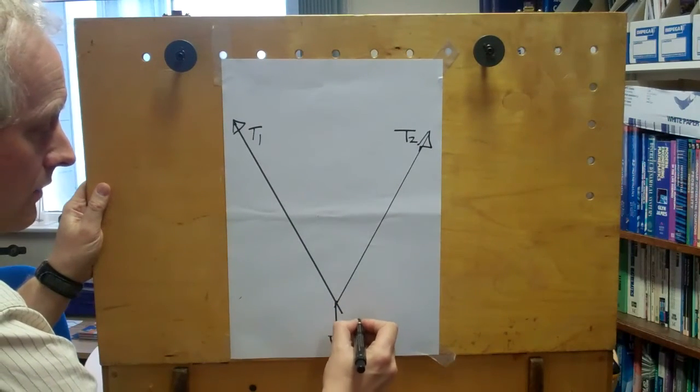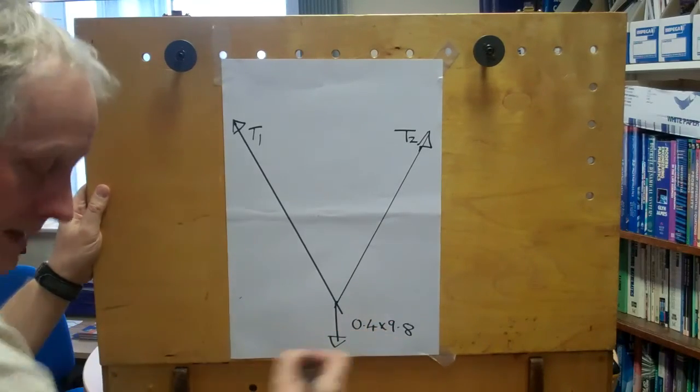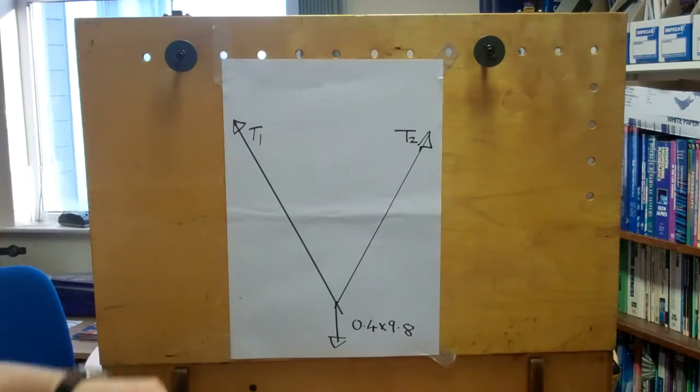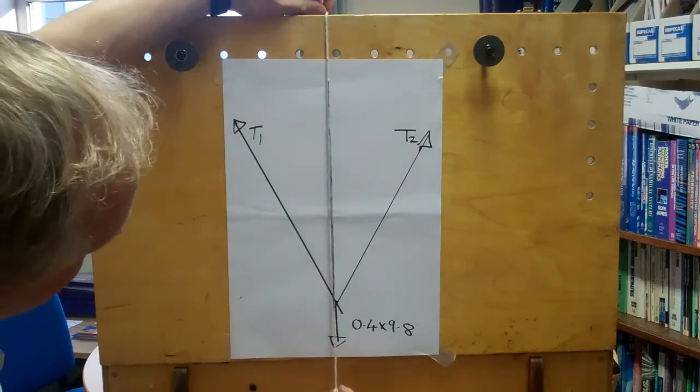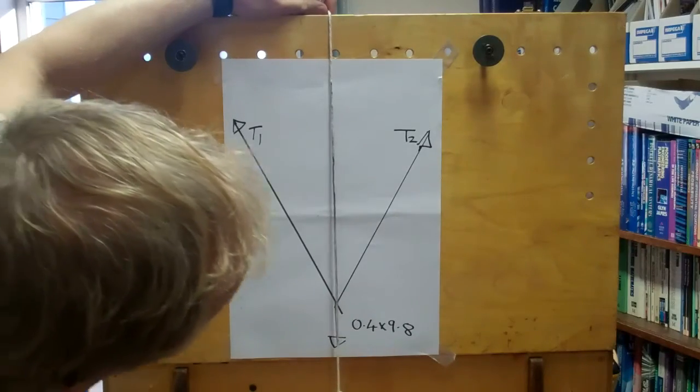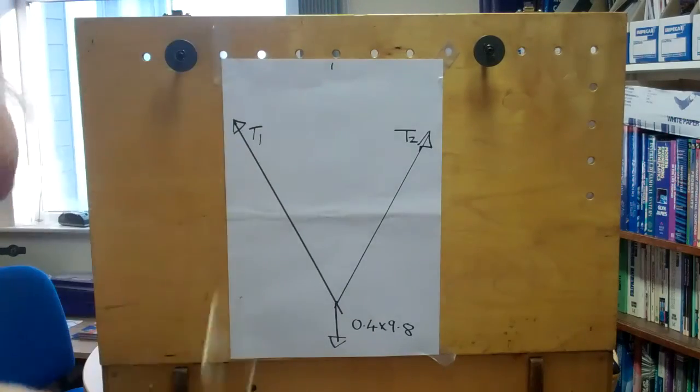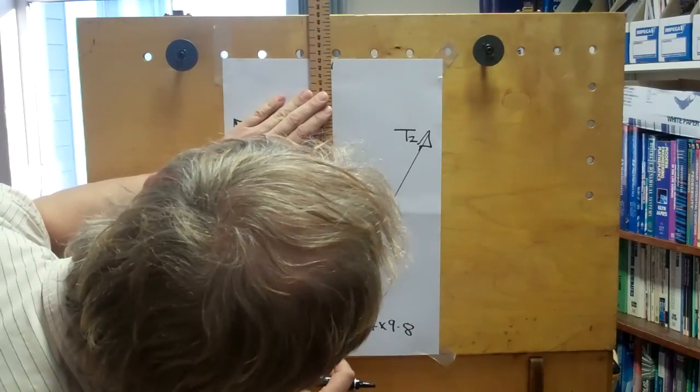And we will have a weight force of 0.4 times 9.8 acting straight down. Now with a bit of help from a plumb line, we can introduce a vertical into our diagram, and then we can measure two angles. So here goes the vertical.